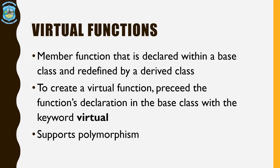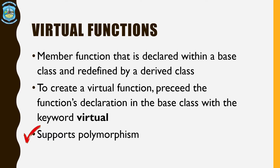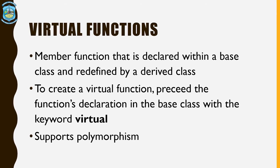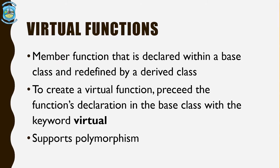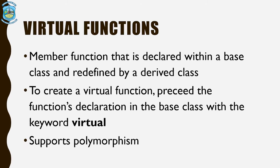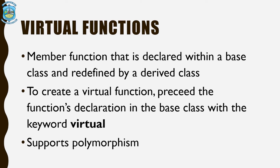Another way to achieve polymorphism in C++ is with the help of virtual functions. Virtual functions are member functions declared within a base class and redefined by a derived class. To create a virtual function, you have to precede the function's declaration with the keyword virtual. This tells the compiler that it is a virtual function and its body will be redefined later. Whenever you have a piece of code which needs to be redefined at a later stage, you can use virtual functions, and when you create the derived class you can go ahead and give a body to that virtual function.